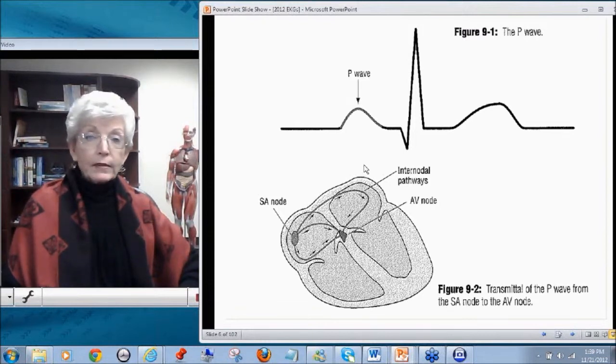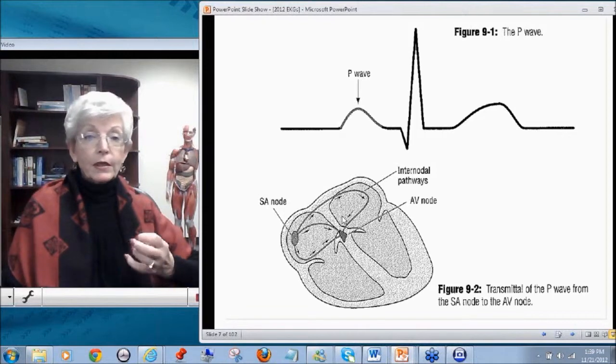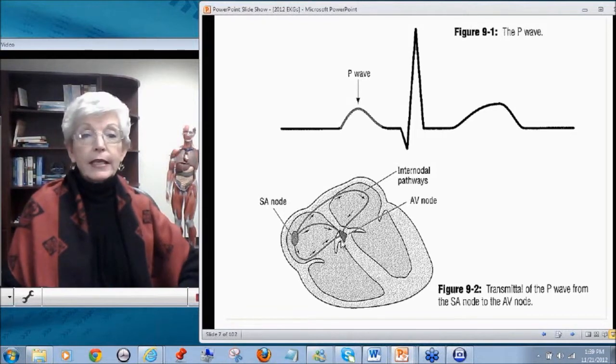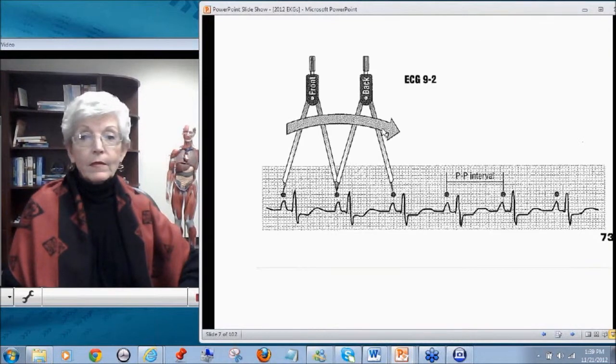Let's move to the next slide. The internodal pathways in the atria allow the atria to fire the right and left sides to contract simultaneously. When the atria contracts or depolarizes, we get the P wave of our EKG.